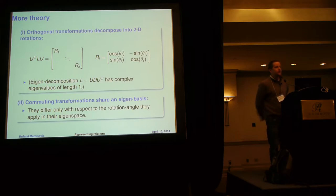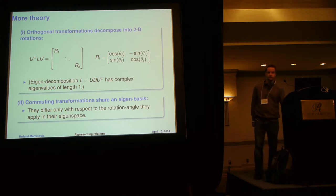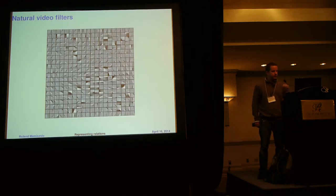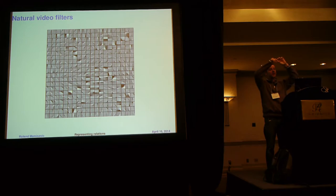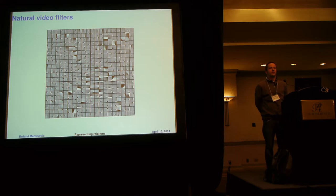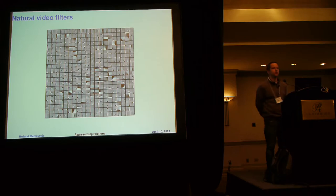If you have questions, you're welcome to interrupt. [Question: The filters in your last example were topographically organized — where does that come from?] That comes from how you set up the pooling matrix. There's a projection where the filters get multiplied, and then a pooling matrix applied afterward. If you set up that pooling matrix to pool over neighboring units, you can encourage the filters to organize spatially in that way.